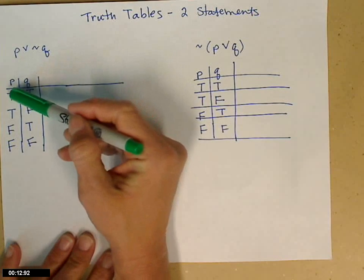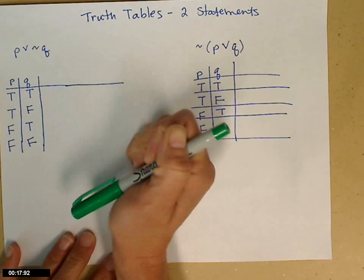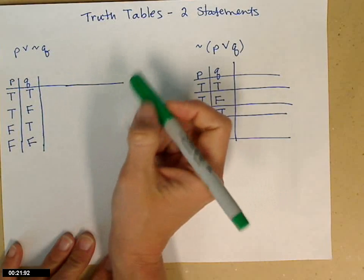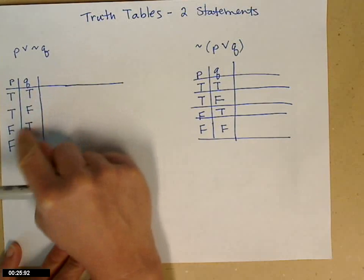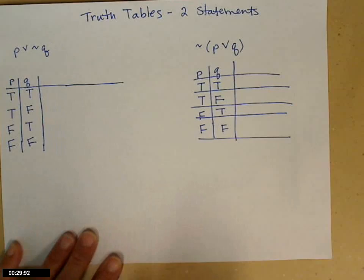So P, I go true, true, false, false, and then Q, I alternate, true, false, true, false. If you've ever done a tree diagram or written out the possible combinations of heads and tails, it looks very similar. I've taken care of all the different possibilities when you have this systematic way of writing it.